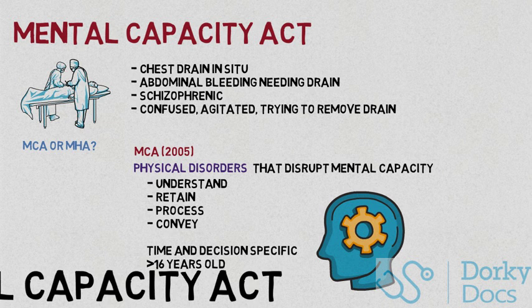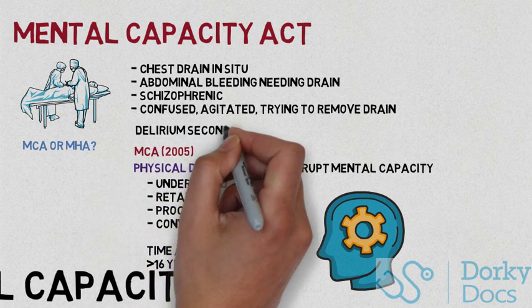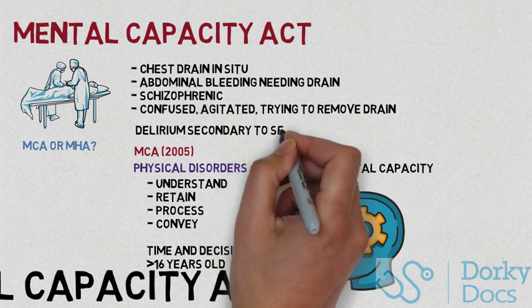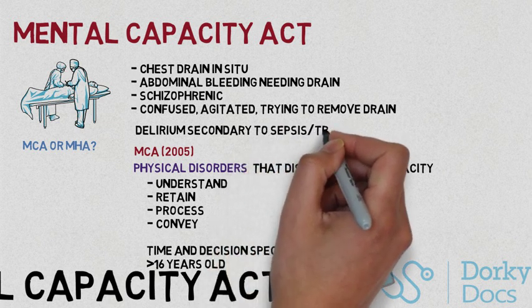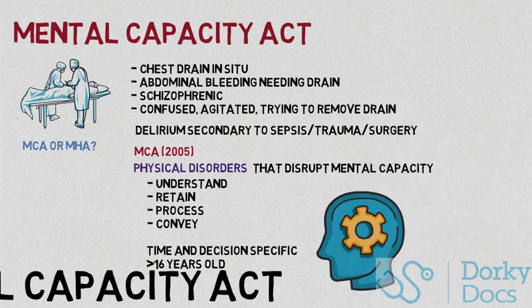Going back to Mr. D, you establish that this gentleman is likely to be delirious — due to a comorbid chest infection, massive trauma, and major surgery — and you deem him not to have capacity specifically for the treatment he is receiving: rehab from trauma, surgery, antibiotics, etc. You establish that Mr. D does not have capacity, and this is subsequently documented and deemed in the patient's best interest. As you have established a physical cause that has disrupted mental function, the Mental Capacity Act is used, not the Mental Health Act.